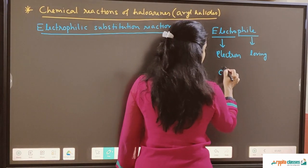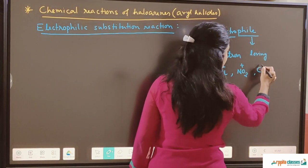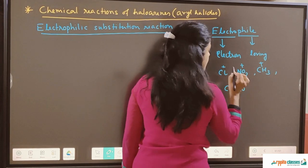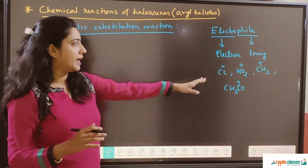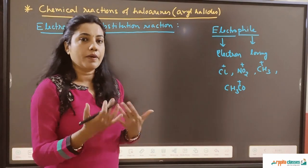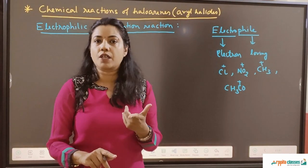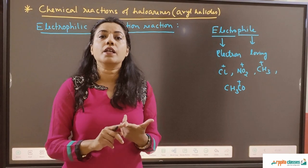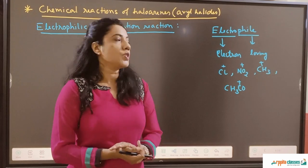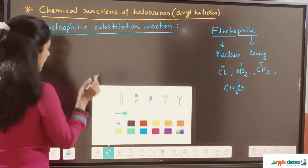For example, Cl⁺, NO₂⁺, CH₃⁺, CH₃CO⁺ — all these are electrophiles as they contain positive charge. So the electrophilic substitution reactions we will study are: halogenation, nitration, sulfonation, and Friedel-Crafts alkylation and acylation reactions. These are the reactions in our syllabus for electrophilic substitution.